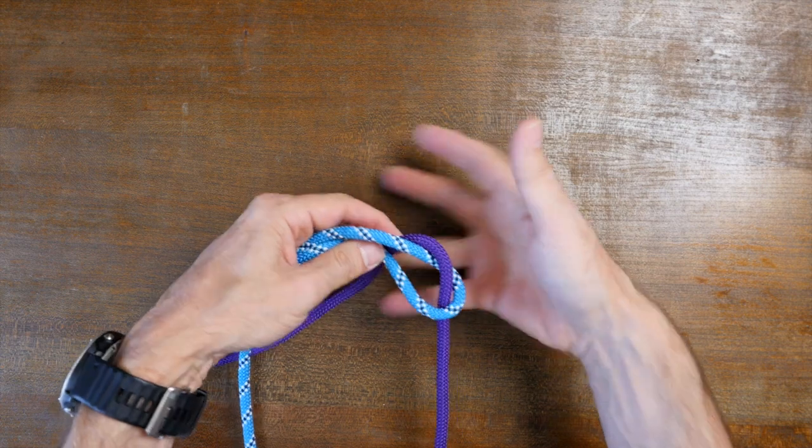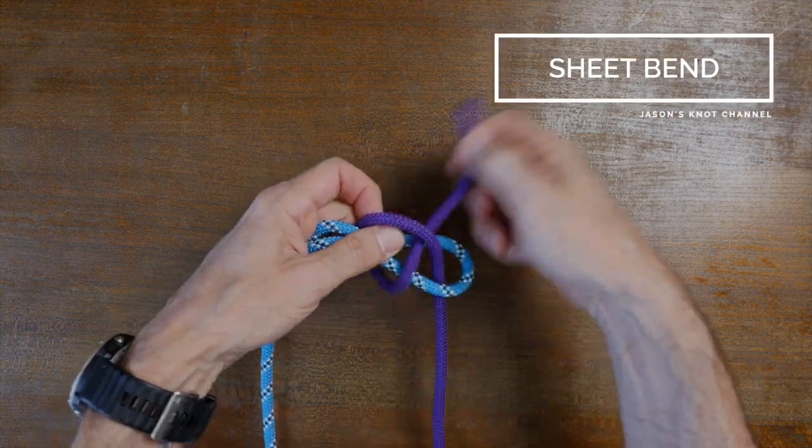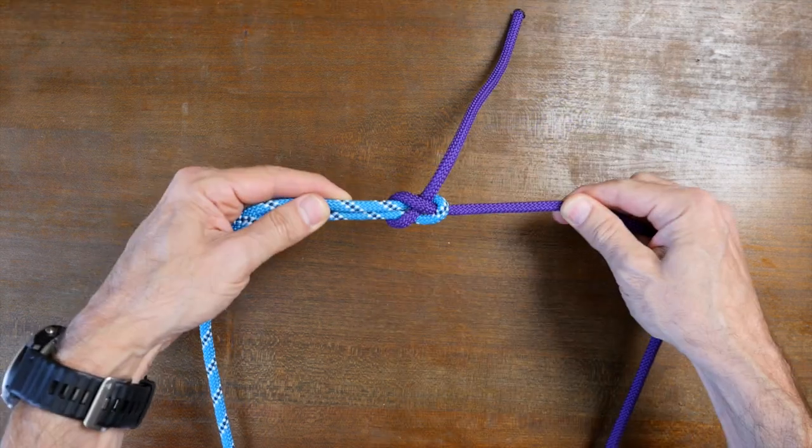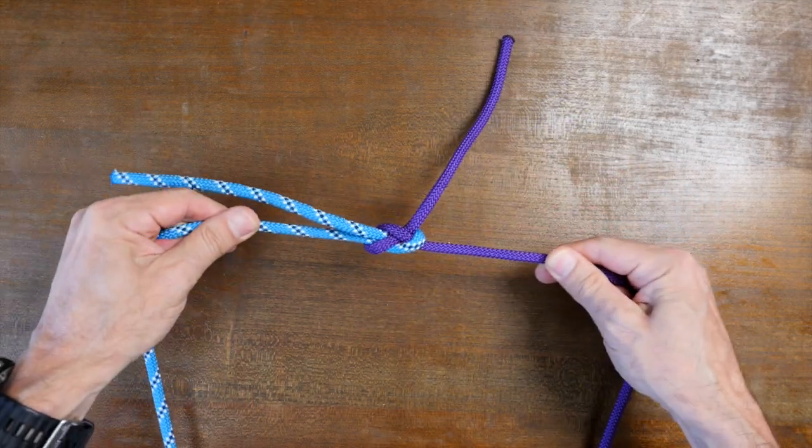One of the most popular knots for joining two ropes is the sheet bend. Likely popular because it's easy to tie, the sheet bend is also capable of holding a heavy load and is also easy to untie when finished.